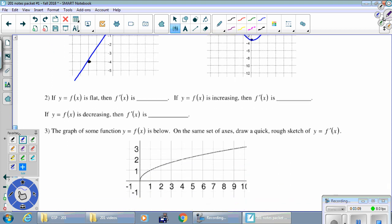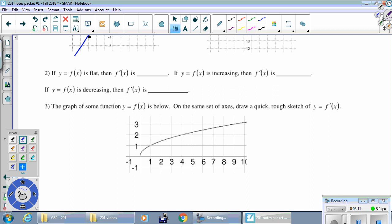Number two, some conclusions we're supposed to draw. If y equals f of x is flat, then f prime is 0. If f is increasing, that meant that the tangent line was going uphill. So any uphill line has a positive slope. So if f is increasing, then f prime is positive. If f is decreasing, then f prime is negative.